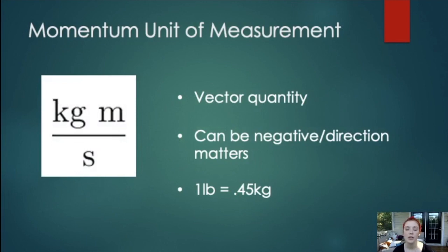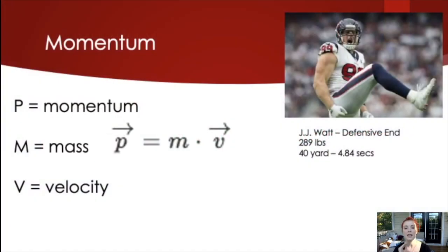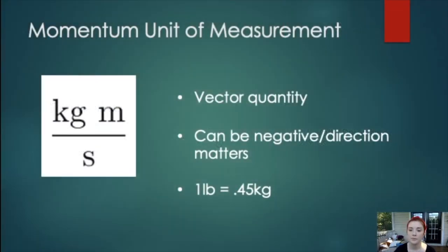All right, so our momentum unit of measurement is a vector, so it's a vector quantity. And remember, scalar means that direction does not matter. Vector means that direction does matter. So I'm going to flip back really quick to the previous slide. If you notice, over P and over V, we have arrows. That denotes that it is a vector, those two things are a vector quantity. Mass isn't a vector quantity because mass is mass. We don't care about its direction. But momentum and velocity, we care about its direction. So that's what those arrows denote. That means that we care about the direction, and so it's a vector quantity. So that means that when we're talking about momentum, it actually can be a negative quantity, because direction does matter.